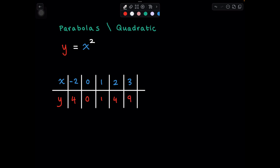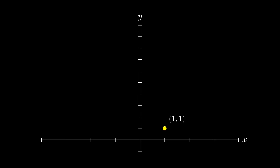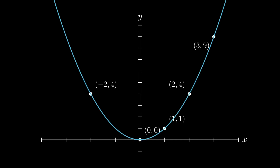So you can see how we have a set of coordinates: negative 2 comma 4, 0 comma 0, 1 comma 1, 2 comma 4, and 3 comma 9. Now I'm going to plot those points on this Cartesian plane. I've plotted 1,1 and 2,4 and 3,9 and negative 2,4 and 0,0 as well. And if you did this with every single x value and drew a line through all of them, it would trace this parabola that you can see here.